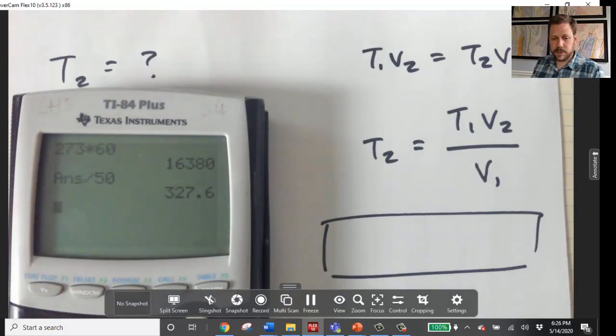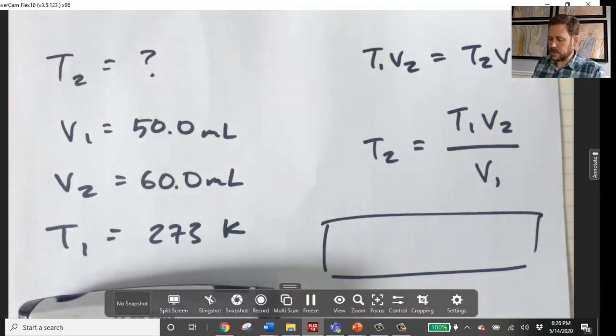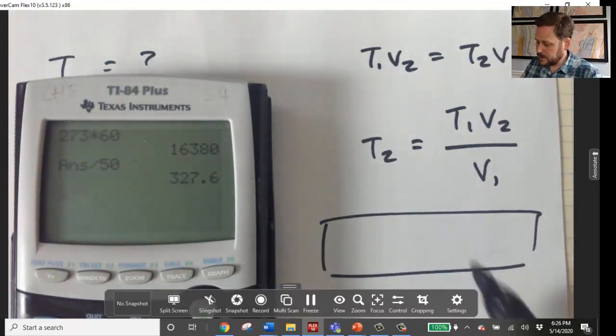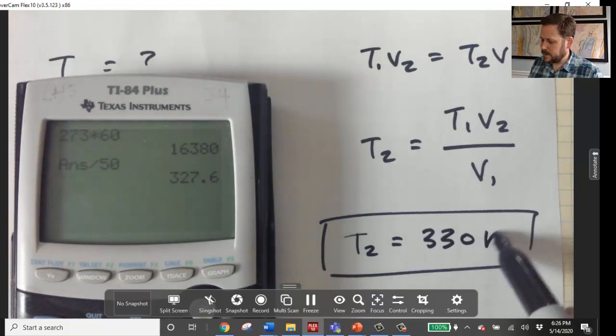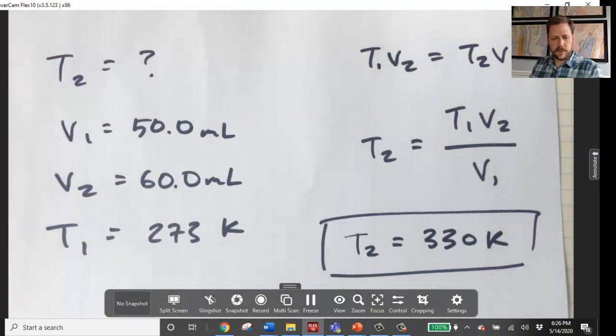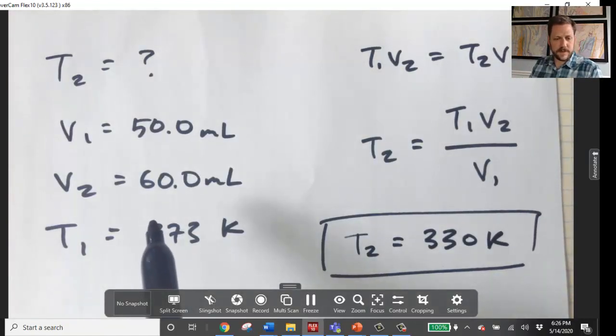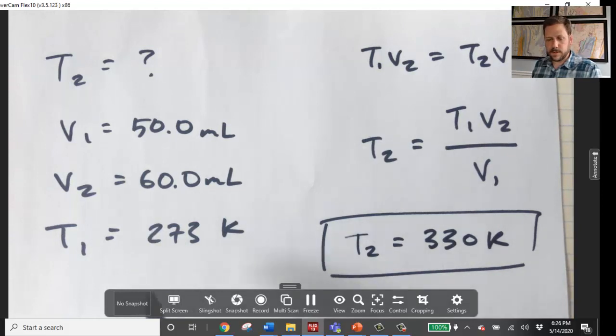Now my calculator says 327.6. I'm going to round that to three significant figures, and that gives me 330. Now that makes sense for a Kelvin temperature, because my volume only went up by about one-sixth of its original amount, and that would correspond to a temperature rise of about one-sixth of the original amount. You can see why using Kelvin temperature is important. If you do this calculation in Celsius, then you'll get an incorrect answer.